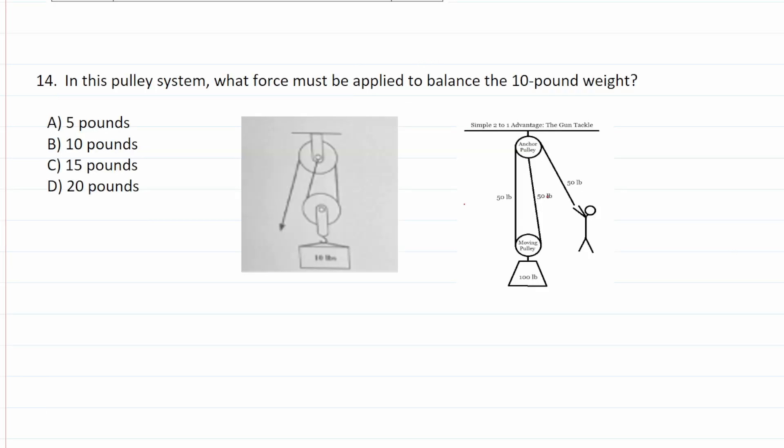Number 14 says in this pulley system, what force must be applied to balance the 10-pound weight? So here is our 10-pound weight here. And we want to know what force we have to apply to balance this 10-pound weight. Well, as it happens, this pulley system is an example of a simple 2 to 1 advantage gun tackle system. So our weight is 10. That means it's going to be distributed evenly between this tension point and this tension point. So there's going to be 5 pounds here, 5 pounds here. That means it's going to take you 5 pounds of force to balance this 10-pound weight. So this one is A. Again, I would recommend that you know how to calculate simple 2 to 1 advantages in pulley systems. Again, you take the weight, you divide it by 2, and then that's how much force you need to balance the weight.